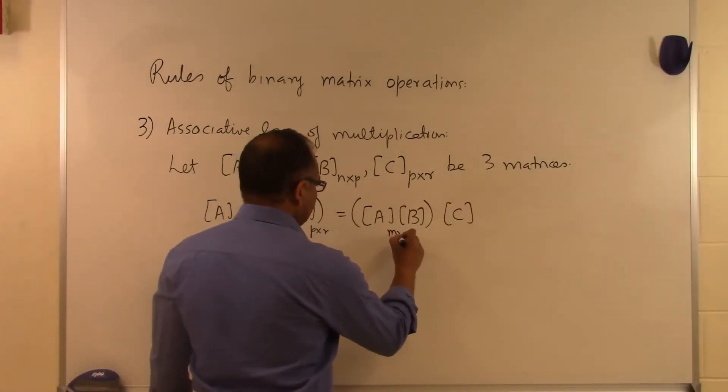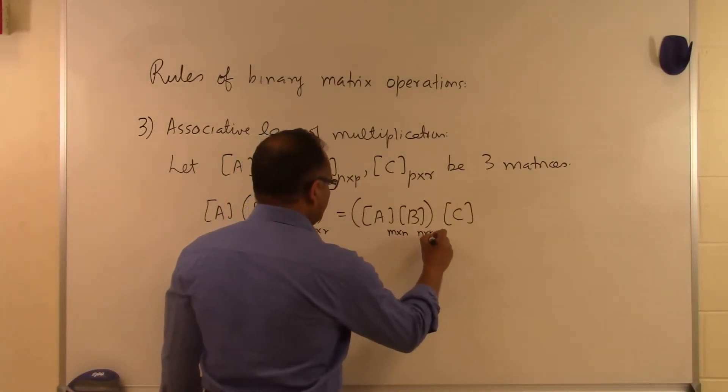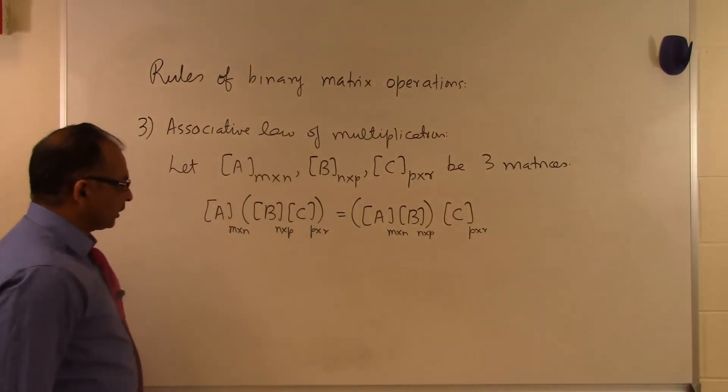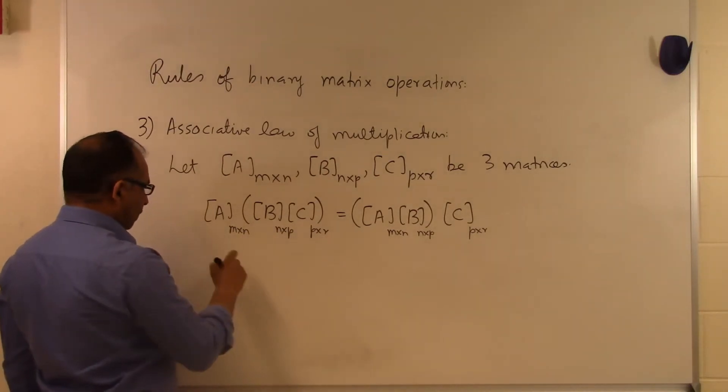Same thing here: this M by N here, M by P here, and P by R here. Only then those matrix multiplications are valid. And then the resulting matrix will be M rows and R columns.